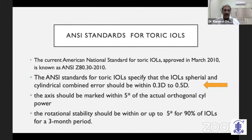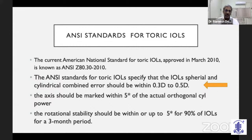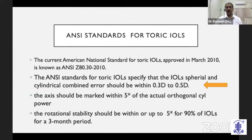The ANSI standards for toric lenses are very similar. They specify that the combined spherical and cylindrical error should be within 0.3 to 0.5 diopter. Also, the axis should be marked within 5 degrees of the actual orthogonal cylinder of that intraocular lens, and rotational stability should be within 5 degrees for 90% of intraocular lenses over a 3-month period.